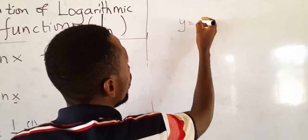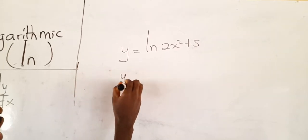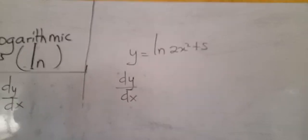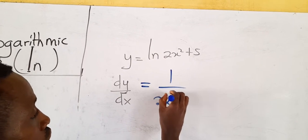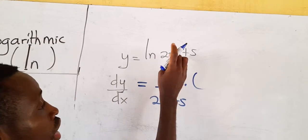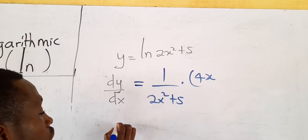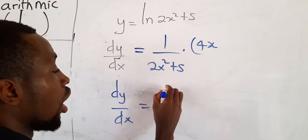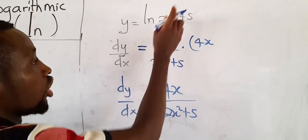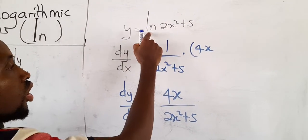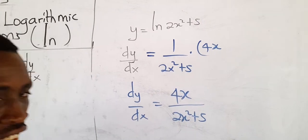Let's look at another one: y = ln(2x² + 5). To find dy/dx, we first reciprocate (2x² + 5) — since it's over 1 — to get 1/(2x² + 5). Now differentiate (2x² + 5): differentiating 2x² gives 4x, and differentiating 5 (a constant) gives 0. So dy/dx = 4x/(2x² + 5). This is the gradient function of y = ln(2x² + 5).